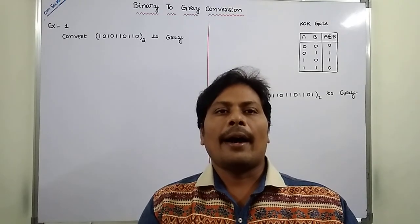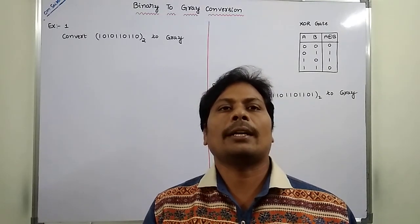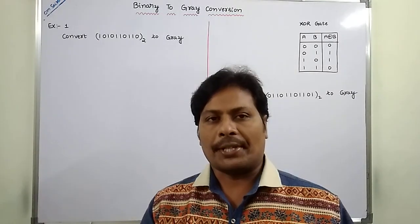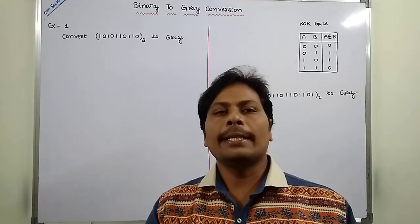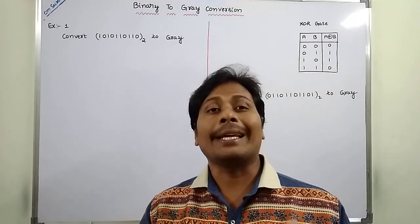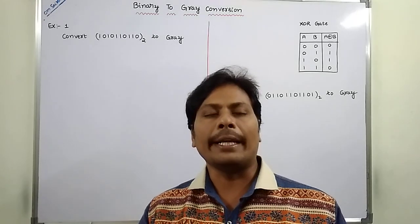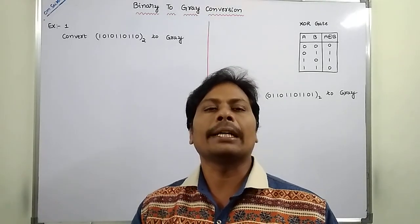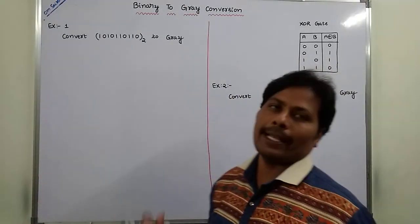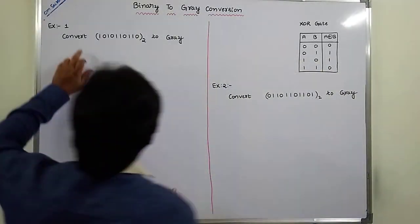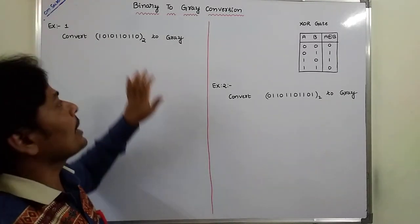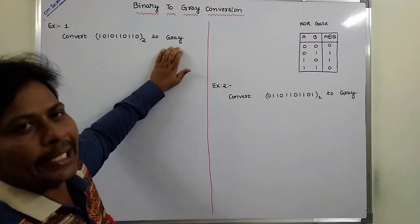Hi friends, today I am giving a lecture on binary to grey code conversion. In this video, we will learn how to perform the conversion from a given binary number into the equivalent grey code number. Now we go for examples. Convert 1010110110 base 2 to equivalent grey code.